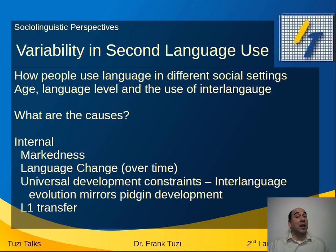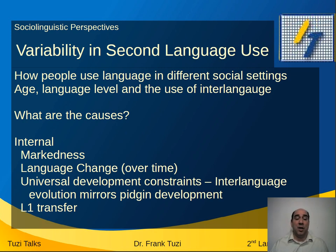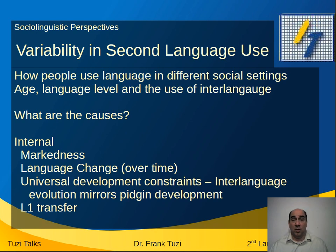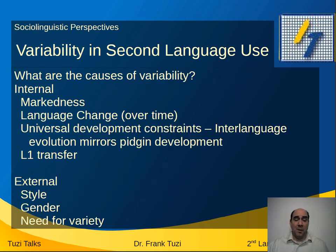Let's begin by looking into the variability in second language use. People using a second language as they're learning it are going to be using it differently depending on a number of factors — for example, their age or their language level, and also the interaction of their interlanguage. What are the causes for these different levels of usage? Some of it can be internal — something called markedness.